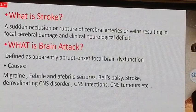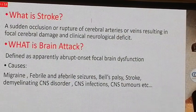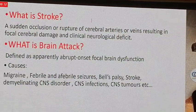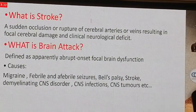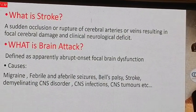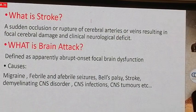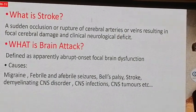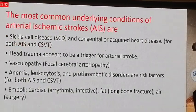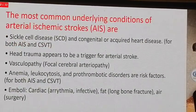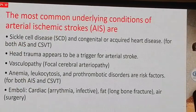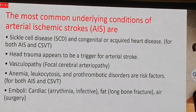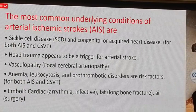Stroke is a sudden occlusion or rupture of a cerebral vessel resulting in acute cerebral damage and clinical neurological deficits. What is a brain attack? It is an apparently acute onset of neurological dysfunction that may be caused by cerebral thrombosis, fibrinoid change, atherosclerosis, stroke, coagulation disorders, and others. The most common underlying conditions include sickle cell disease, congenital or acquired heart diseases, head trauma, vasculopathy, anemia, polycythemia, prothrombotic disorders, emboli, and cardiac fat embolism.